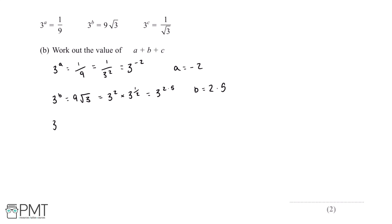Finally, 3 to the power of c is equal to 1 over root 3. We can rewrite root 3 as 3 to the power of a half, so 1 over root 3 is equal to 1 over 3 to the power of a half. And 1 over 3 to the power of a half is equal to 3 to the power of negative a half. So c is equal to negative a half.